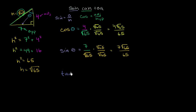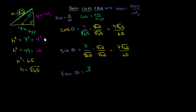If I asked you the tangent of theta — back to SOHCAHTOA — the TOA part tells us tangent is opposite over adjacent. The opposite side is 7, and the adjacent side is 4. So tangent of theta is 7 over 4. And we're done — we've figured out all the trig ratios for theta.